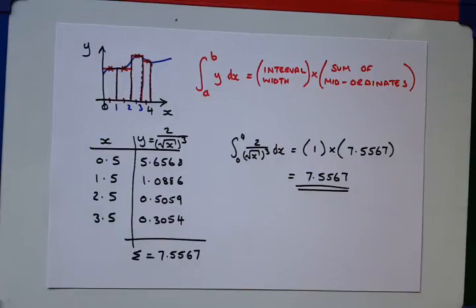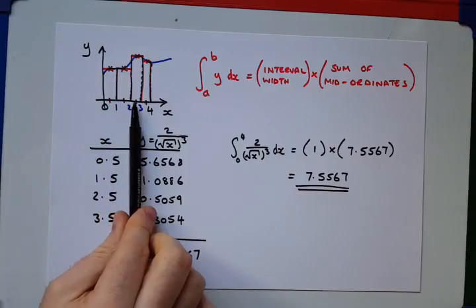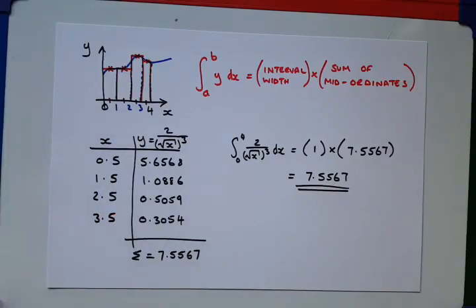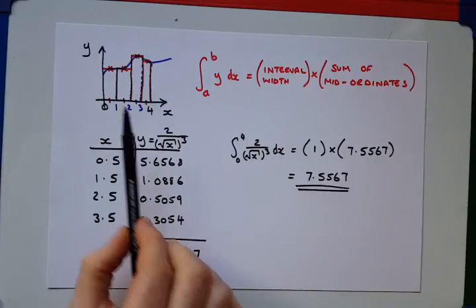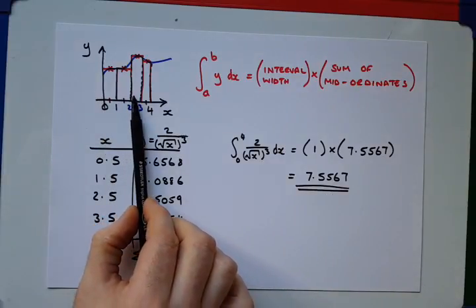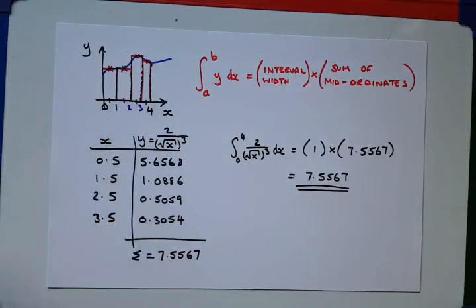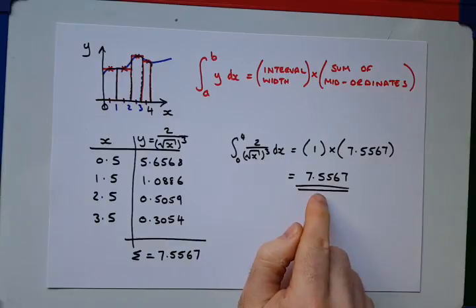Now, what's important about the mid-ordinate rule is that the greater the number of intervals that we have, the more accurate our final answer is going to be. So, I was quite crude here and used four intervals. If I had of used eight intervals, 16 intervals, or 32 intervals, my answer would be far more accurate here.